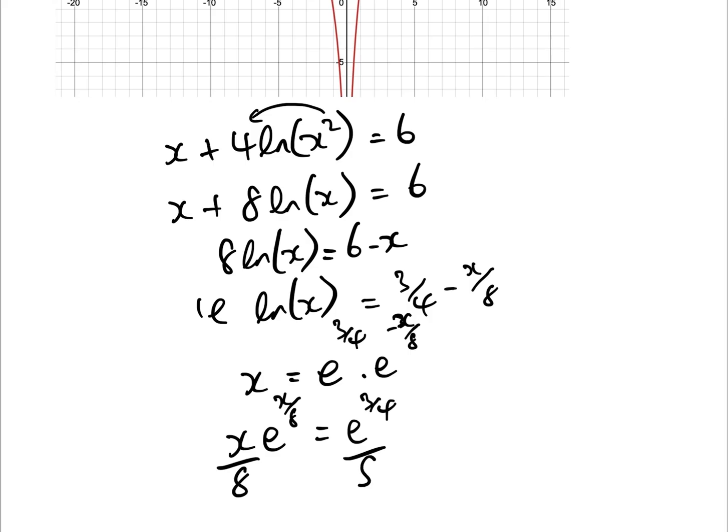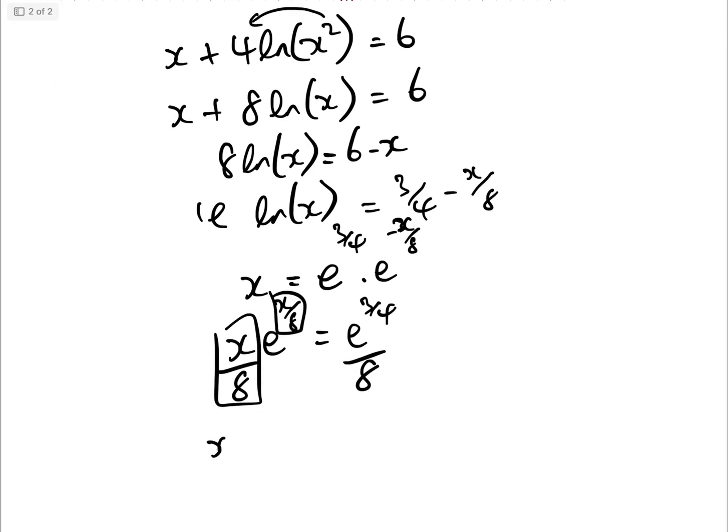And then when we divide by 8 to get it in our Lambert W function, we can now say, well, x equals 8 w of e to the 3 quarters over 8. And we do have one of the solutions. But the problem is, hang on a sec, where have the other two solutions gone?